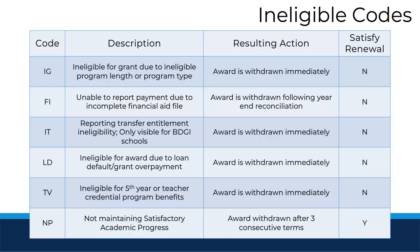The ineligible codes we will cover are: Ineligible for Grant (IG), File Incomplete (FI), Ineligible Transfer (IT), Loan Default (LD), Ineligible for a Fifth Year Program (TV), and Not Maintaining Satisfactory Academic Progress (NP). We will go over all of these codes in the next few slides.